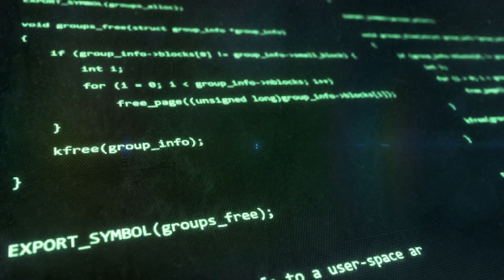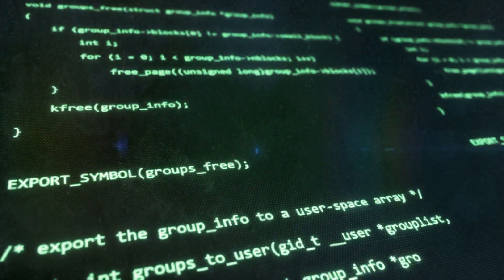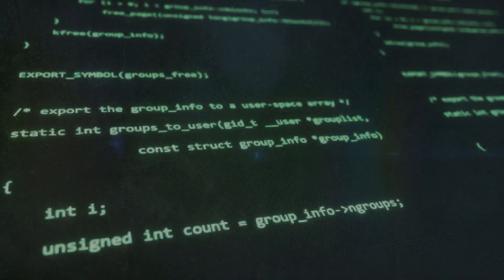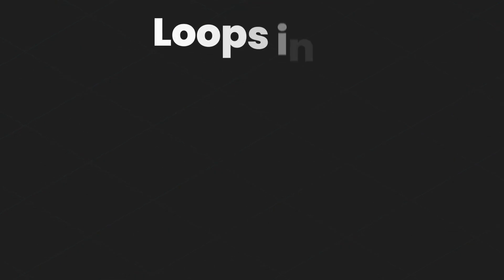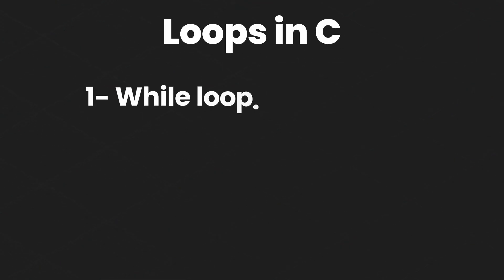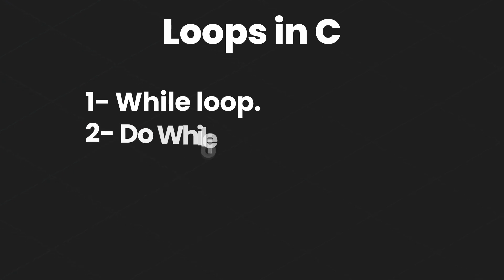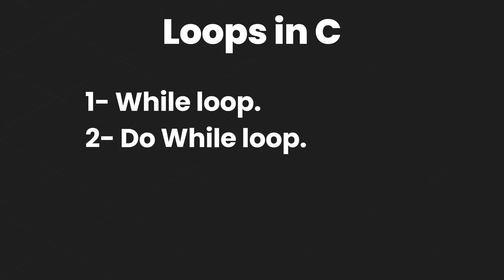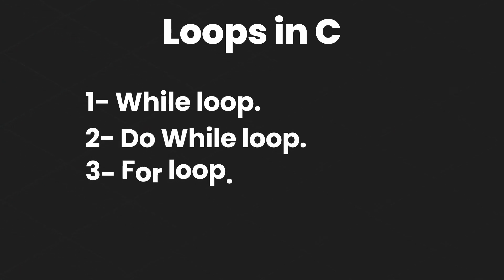Obviously, any sane programmer would use 3 lines of code to get more done. In C programming language, there are 3 types of loops: the first being the while loop, the second being the do-while loop, and the last one being the for loop.